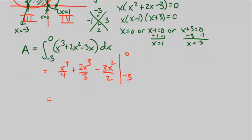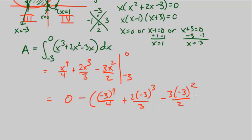So now we go ahead and plug in 0. So 0 to the 4th, 0 cubed, 0 squared, this is all going to be 0 for the first term, minus plug in negative 3. Negative 3 to the 4th over 4 plus 2 times negative 3 cubed over 3 minus 3 times negative 3 squared over 2.